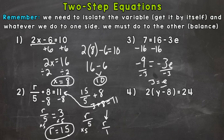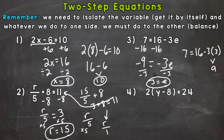Negative 9 divided by negative 3 gives us a positive 3, and we're left with e over 1 which is just e. We isolated the variable, so e equals 3. Let's plug it back in: 3 times 3 is 9, bring down our 16, and 16 minus 9 does give us that 7 on the left-hand side. So we were correct — e equals 3.